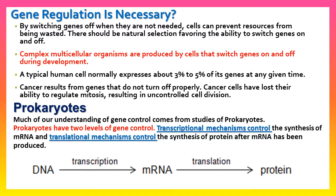Much of our understanding of gene control comes from the study of prokaryotes like E. coli bacteria. Prokaryotes have two levels of gene control: transcriptional mechanism control — control of genes at transcription, meaning the synthesis of messenger RNA — and translational mechanism control, meaning the synthesis of protein after messenger RNA has been produced.